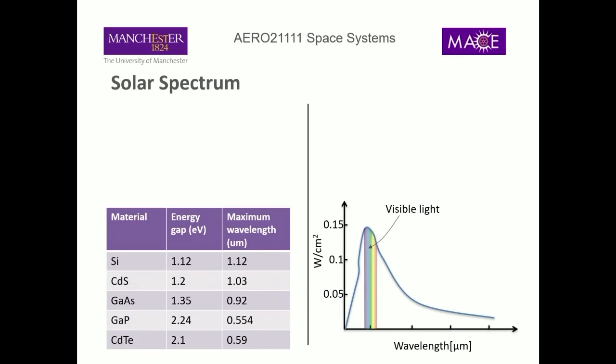This diagram shows the solar spectrum in terms of wavelength. The peak is in visible light, so that's where we want our solar arrays operating. Photon energy is inversely proportional to wavelength — shorter wavelengths give more energy per photon, so ultraviolet gives more while longer infrared wavelengths give less. We need enough energy for electrons to jump the band gap, but ideally not too much, because excess energy is dissipated as heat in the system.